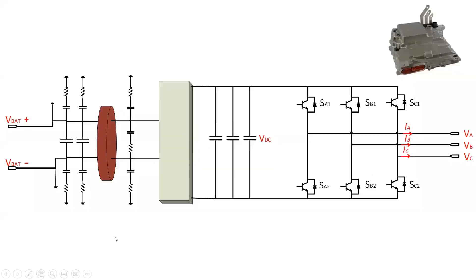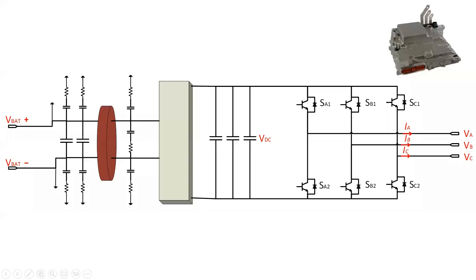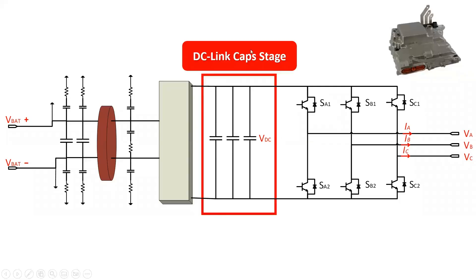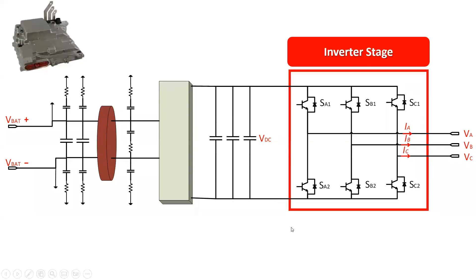The inverter consists of three stages. The first is the input stage, which outputs a DC voltage from the battery pack and consists of several capacitors and EMI filters. The second stage involves DC-to-DC conversion using a DC link capacitor, which filters and smooths out the DC voltage on the DC bus rails. The last stage, which is the inverter stage, initiates conversion via high-frequency switching, and delivers the inverted power to the load — the electric motor.